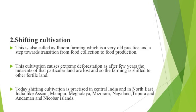Second is shifting cultivation, also called jhoom farming, a very old practice and a step towards transition from food collection to food production. This causes extreme deforestation as after a few years the nutrients of that land are lost and farming is shifted to other fertile land. Today, shifting cultivation is practiced in central India and in the northeast — Assam, Manipur, Meghalaya, Mizoram, Nagaland, Tripura, and Andaman and Nicobar Islands.